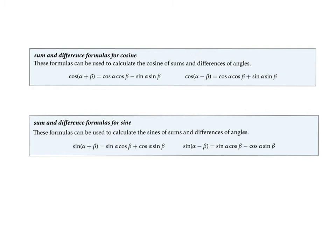We've been working with trig identities, and today I want to introduce a new group of trig identities associated with sine and cosine functions. These are called the sum and difference identities. If you read the lesson that goes along with this video, you'll see some background about these four formulas, but I just want to summarize their statements and how we use them in this video.